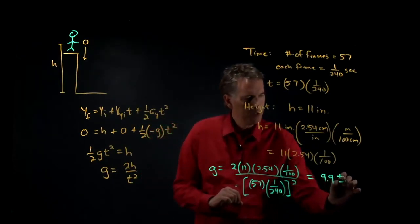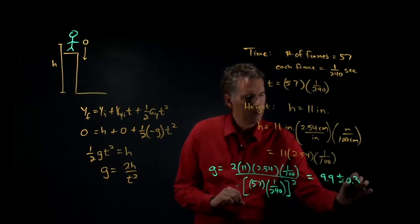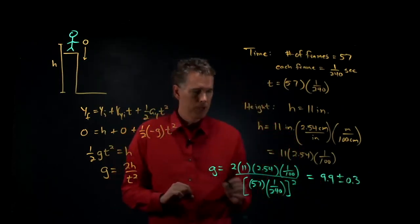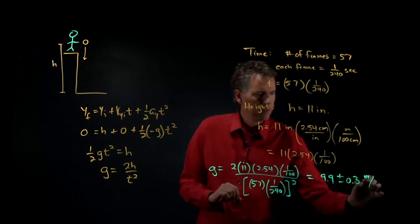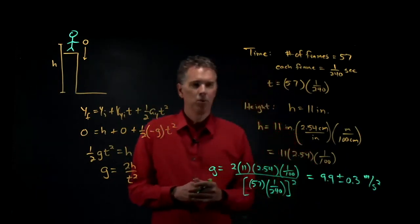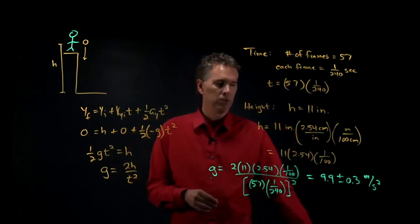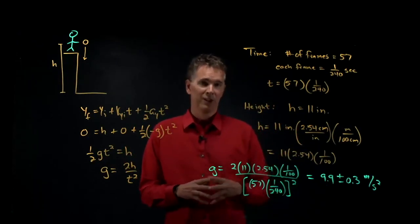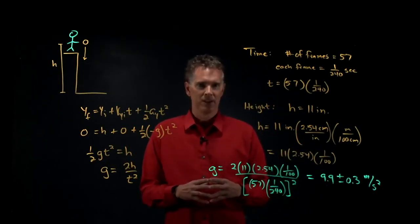If you do it, you can double check. It's about an extra 0.3. So this should be your final answer: 9.9 plus or minus 0.3 meters per second squared, which is really close to the actual value of g.